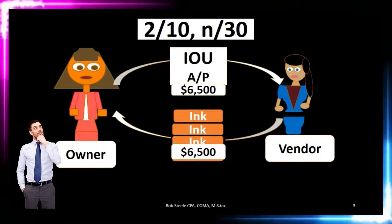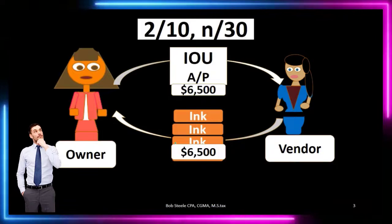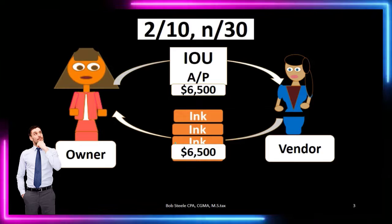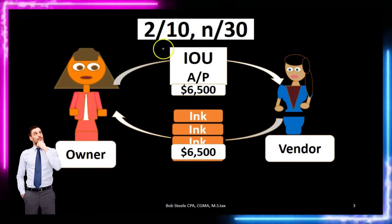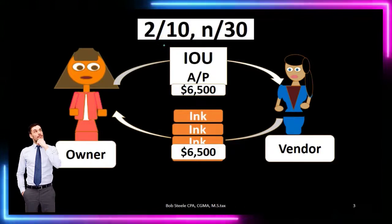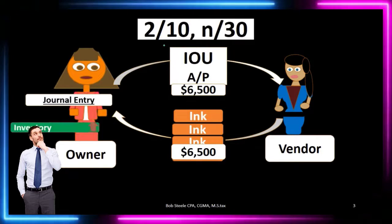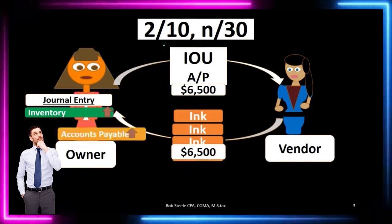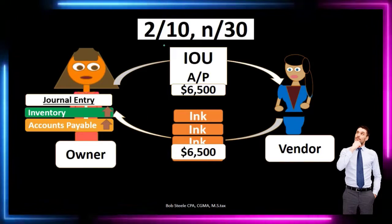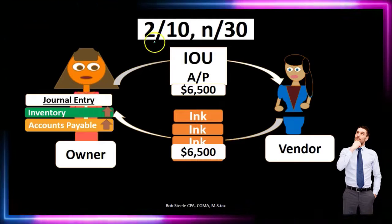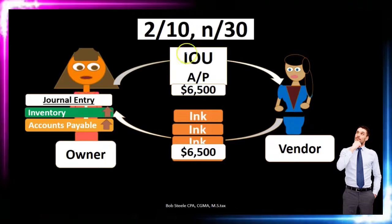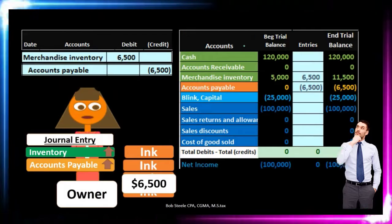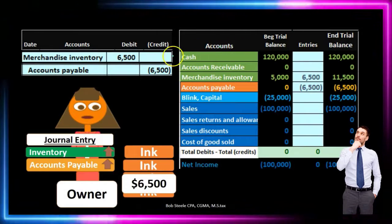The six thousand five hundred is the sticker price. When we first record the transaction, we put it on at the full price of six thousand five hundred, and then deal with the discount if we pay within the discounted period — in this case ten days. The journal entry would increase inventory by six thousand five hundred and increase accounts payable by that same six thousand five hundred, the amount before the two percent discount, as if we paid within thirty days.